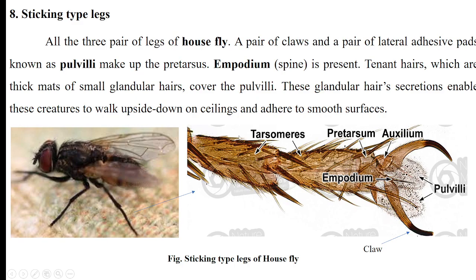Sticking type legs are present in house flies — all three pairs of thoracic legs are modified for sticking. The claws, pulvilli (lobe-like structures), and empodium (spine-like structure) are present, along with hairs that secrete sticky material. This helps house flies stick to ceilings without slipping.